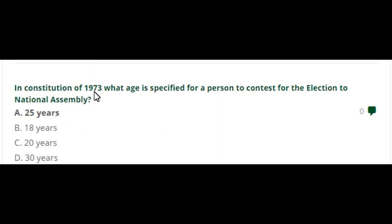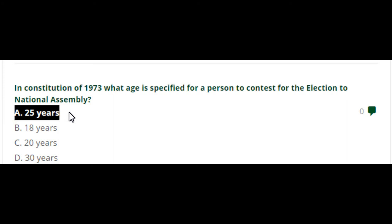In the constitution of 1973, what age is specified for a person to contest for election to the National Assembly? That is 25 years. Option A is the right answer.